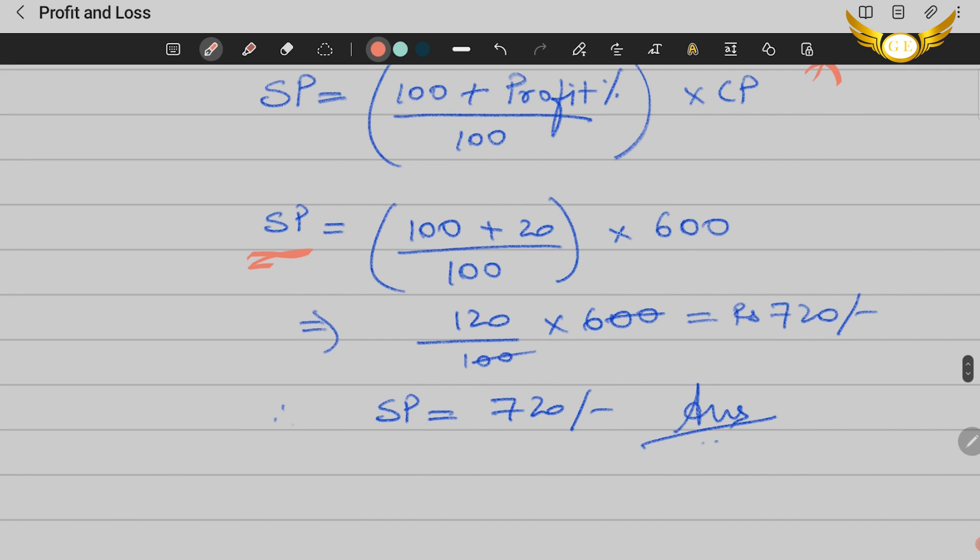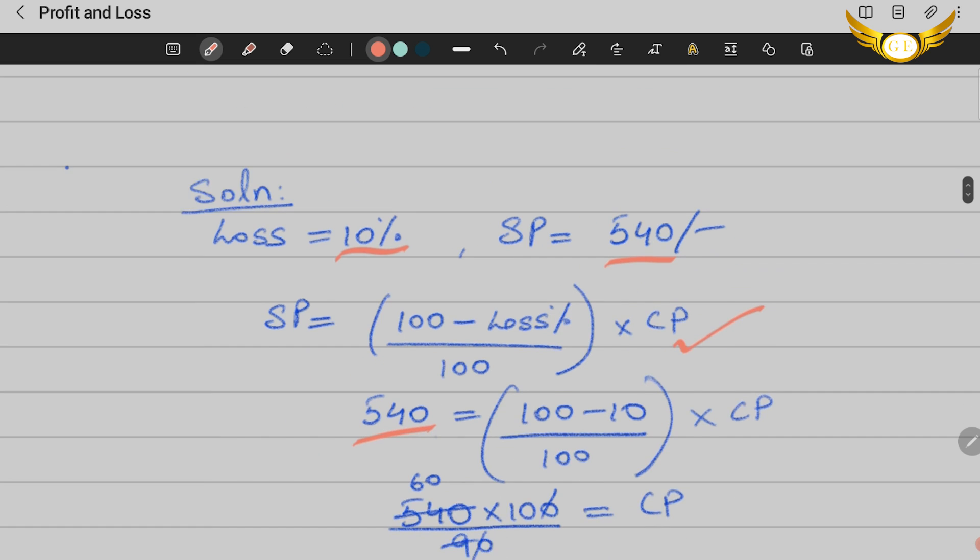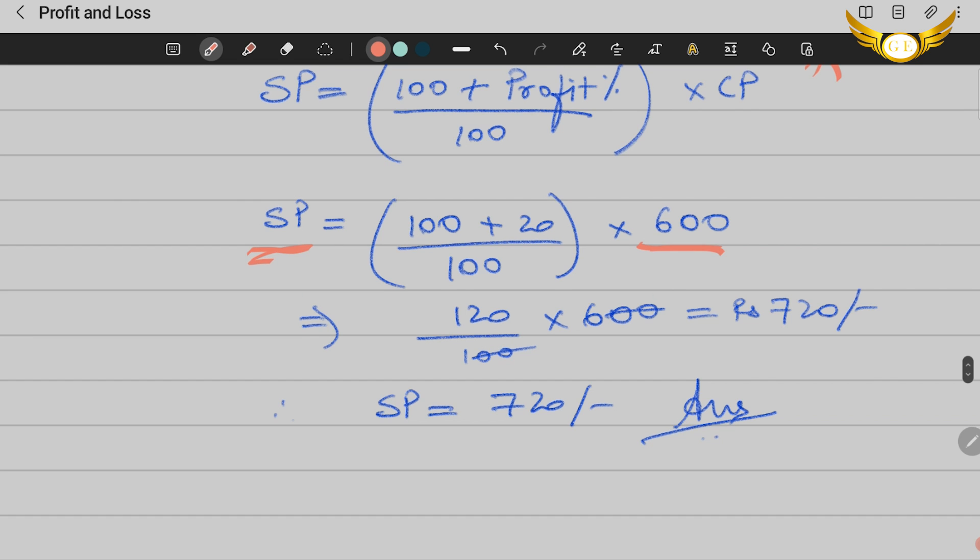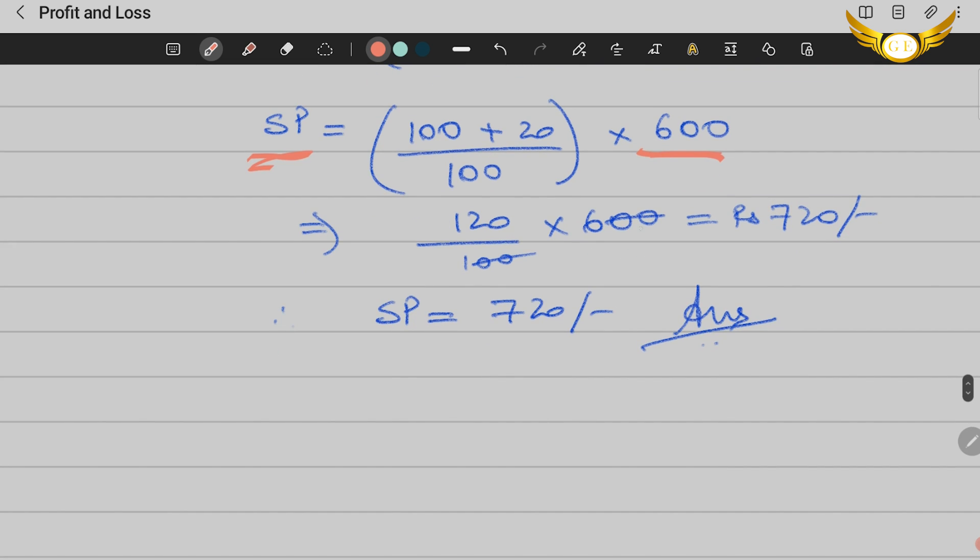Substitute the profit and CP: 100 plus 20 upon 100 into 600. Solving everything, your answer is 720, which means when you sell this bag at rupees 720 you will earn a profit of 20%. I hope the solution is clear to you.